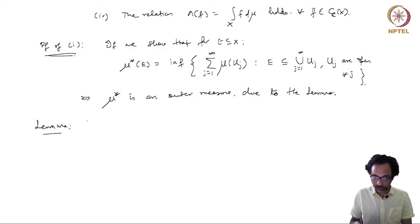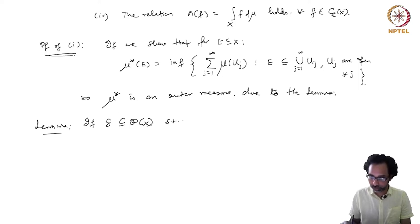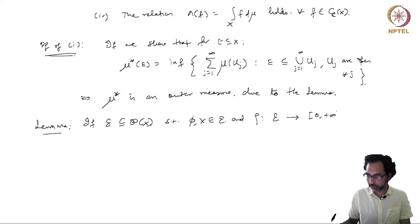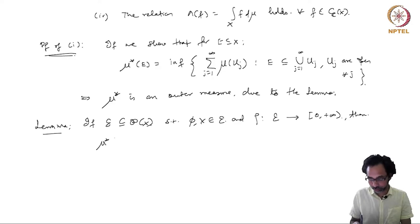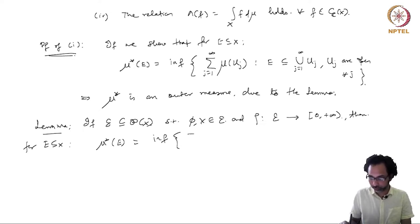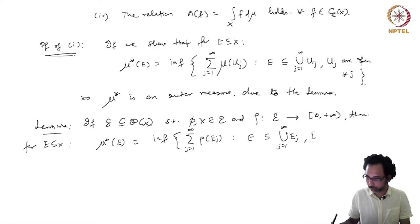That lemma said: if ℰ is a collection of subsets of X such that the empty set and the entire set X both belong to ℰ, and ρ is a map from ℰ to [0, ∞), then μ*(E) defined as the infimum of Σρ(E_j), j = 1 to ∞, such that E ⊆ ∪E_j and each E_j belongs to ℰ, is an outer measure.